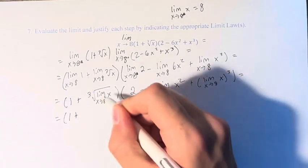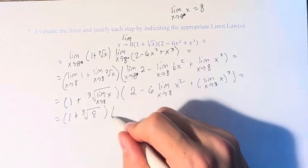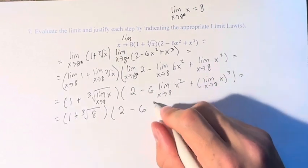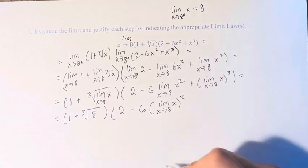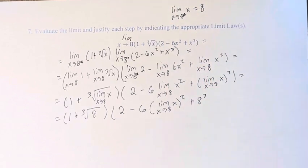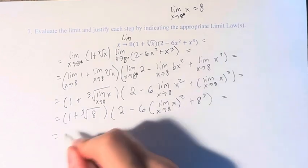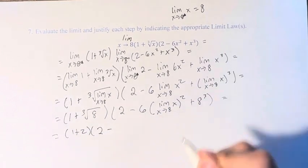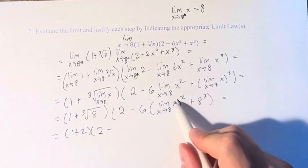This is therefore 1 plus the cube root of 8 — which is 2 — times 2 minus 6. The limit of x squared is just 8 squared, and the limit of x cubed gives us plus 8 cubed. So we have 1 plus 2, times 2 minus 6 times 8 squared.